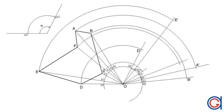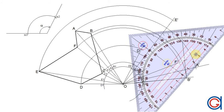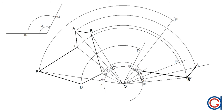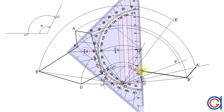Now that we have obtained all our rotation points, the last step is, with a thicker line, to join A prime to B prime, B prime to C prime, and C prime to D prime.